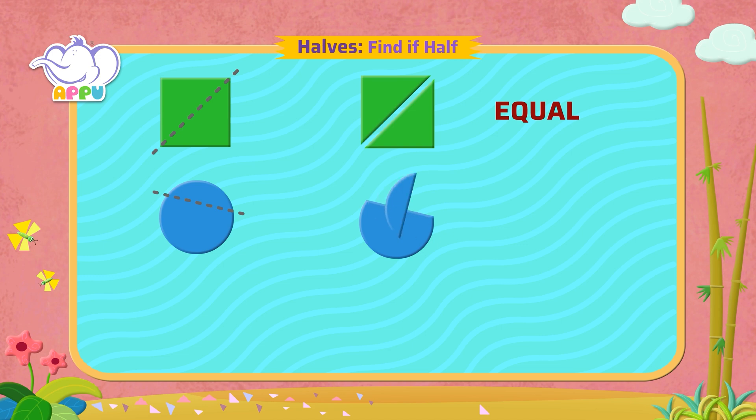We can clearly see one part is smaller than the other. So they are not equal. So it is not two halves.